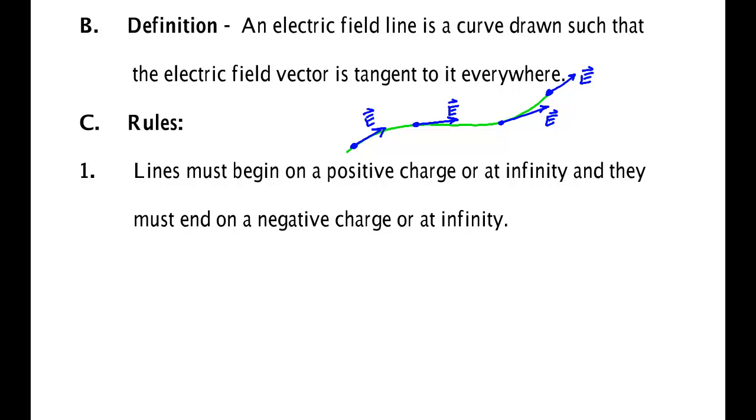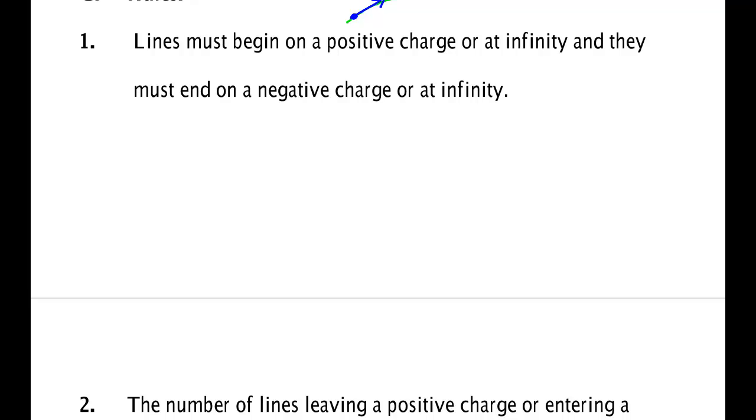There are going to be some rules to this system. How many lines? How do you find the strength? Yes, I've told you how to find the direction but how do I find the length of this electric field vector? Well here are the rules. First, the lines must always begin on a positive charge or at infinity and they must always end on a negative charge or at infinity. So if you have a positive charge you can have lines coming out from that positive charge like this.